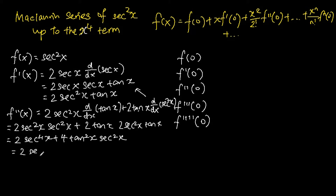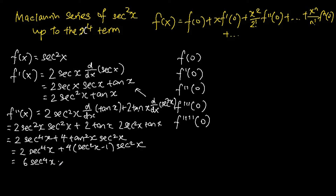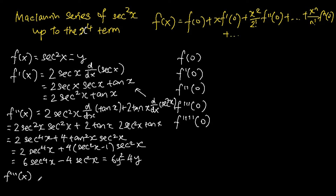We then use the trigonometric identity that tangent squared x equals secant squared x minus 1. Substituting and simplifying gives us f double prime x equals 6 secant to the power of 4 x minus 4 secant squared x. This is also equivalent to 6y squared minus 4y if we let y equal secant squared x. I change it to y because finding f triple prime x will be much easier using y.